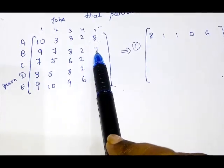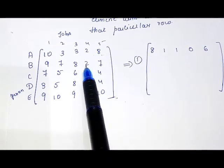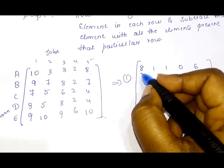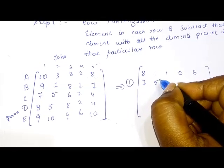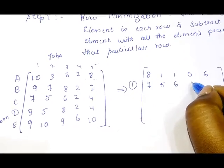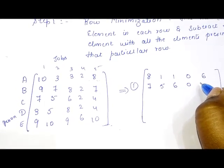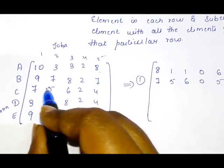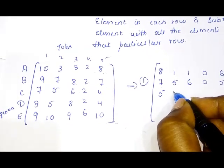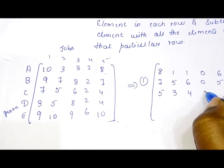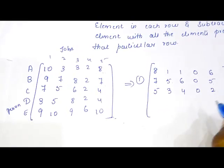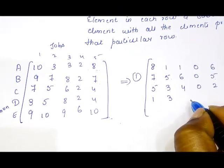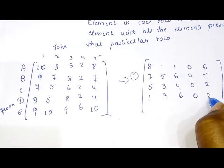In the second row, the least element is also 2. Subtracting: 9 minus 2 is 7, 7 minus 2 is 5, 8 minus 2 is 6, 2 minus 2 is 0, and 7 minus 2 is 5. In the third row, the least element is again 2: 7 minus 2 is 5, 5 minus 2 is 3, 6 minus 2 is 4, 2 minus 2 is 0, and 4 minus 2 is 2. For the fourth row, the smallest is 2: 3 minus 2 is 1, 5 minus 2 is 3, 8 minus 2 is 6, 2 minus 2 is 0, and 4 minus 2 is 2. In the last row, the least element is 6.